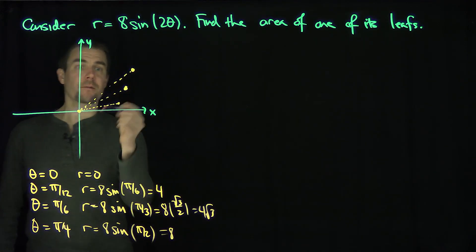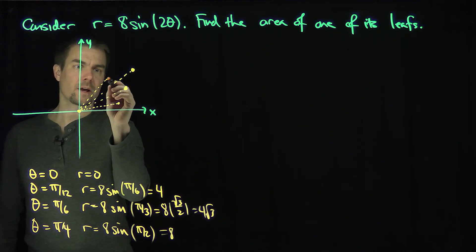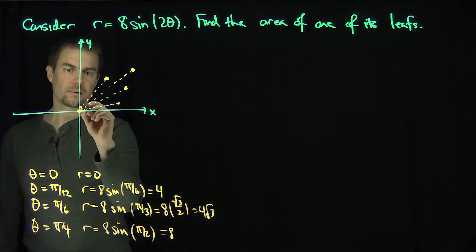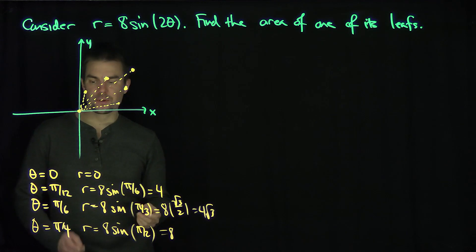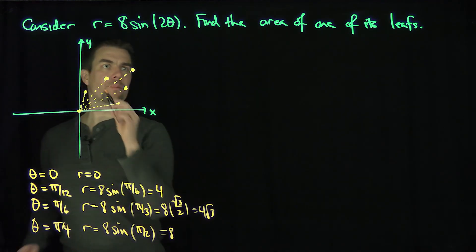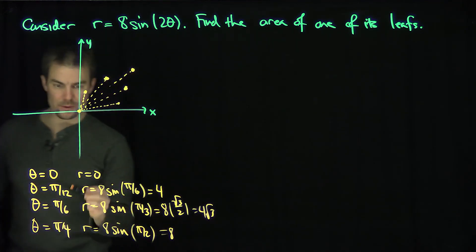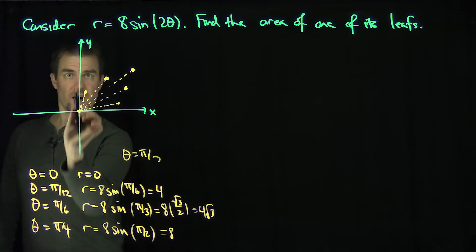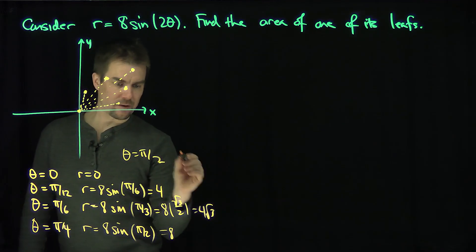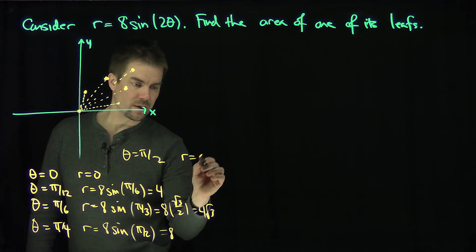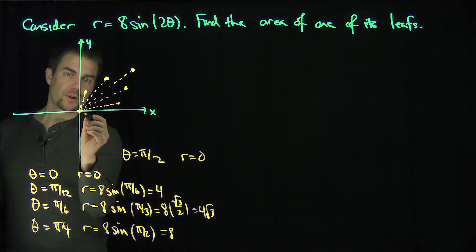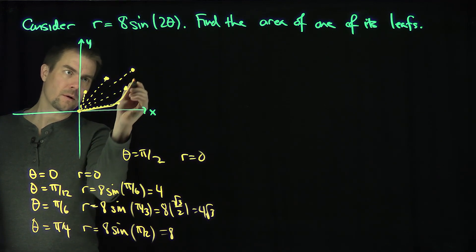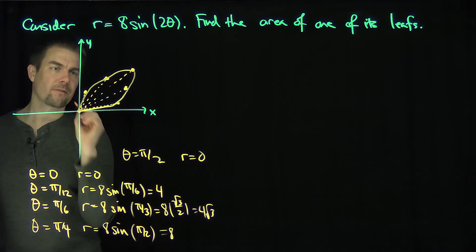And then what happens? Then everything reflects backwards. It starts to decrease in the same sort of rate. And then when I plug in theta equals pi over 2, I'm going straight up on this axis. When you're pi over 2, then r is going to be equal to 0 because I have the sine of pi. So this rose is going to develop like this. The curve does this. And that gives me the pedal of the rose.